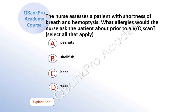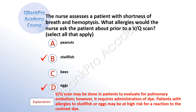The nurse assesses a patient with shortness of breath and hemoptysis. What allergies would the nurse ask the patient about prior to a VQ scan? Select all that apply. A, peanuts. B, shellfish. C, bees. D, eggs. The correct answer is B, shellfish, and D, eggs. Explanation: A VQ scan may be done in patients to evaluate for pulmonary embolism. However, it requires administration of dye. Patients with allergies to shellfish or eggs may be at high risk for a reaction to the contrast dye.